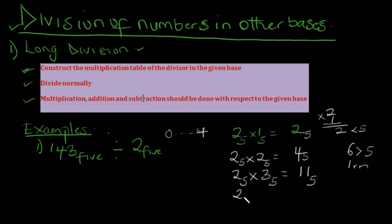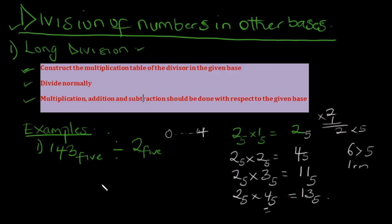2 in base 5 multiplied by 4 in base 5 equals 8, which gives us 13 in base 5. We stop at 4 because the highest digit in base 5 is 4. This is the multiplication table we will be using in our division.